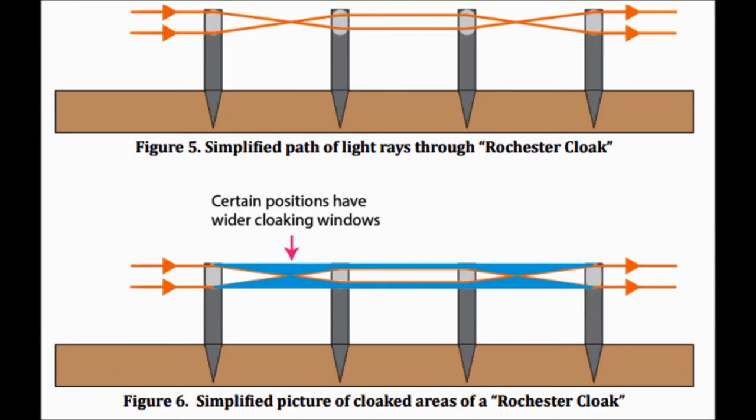So, this brings up the final yet important point about the Rochester cloak. The apparatus does not allow you to see through objects placed in the center axis, but rather has cloaked ring-shaped regions around the center axis.